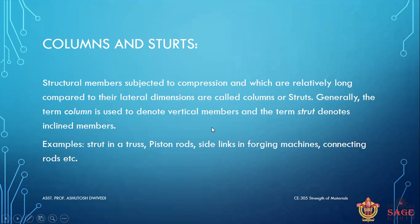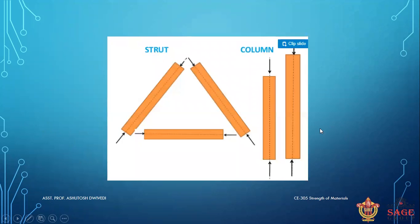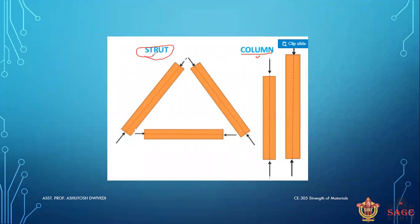Generally, the term 'column' denotes a vertical member and 'strut' denotes an inclined member. Column is also a type of strut — when a strut is vertical, it is known as a column. A strut is a structural member subjected to axial compressive force, and it may be vertical, horizontal, or inclined.